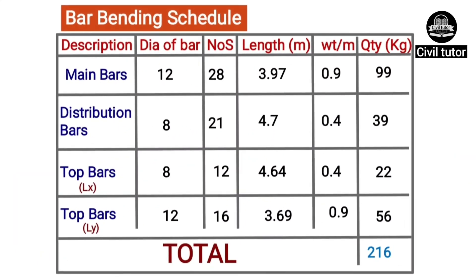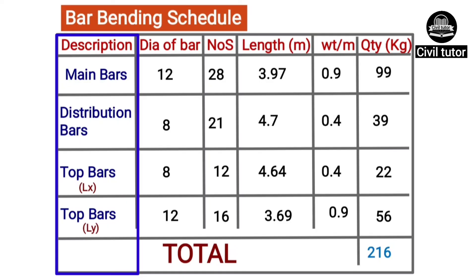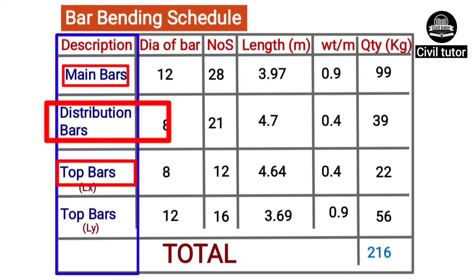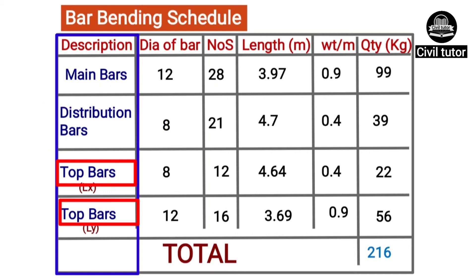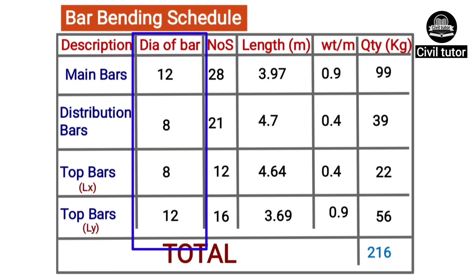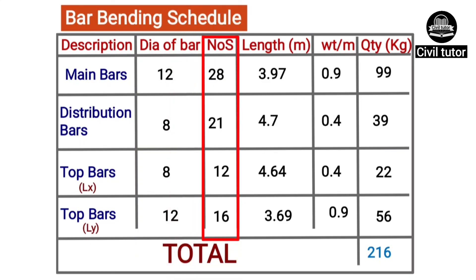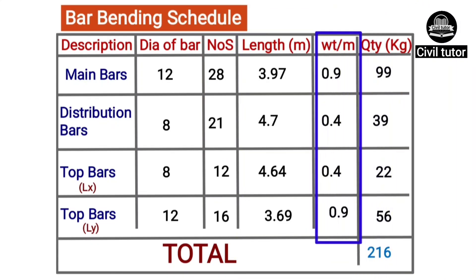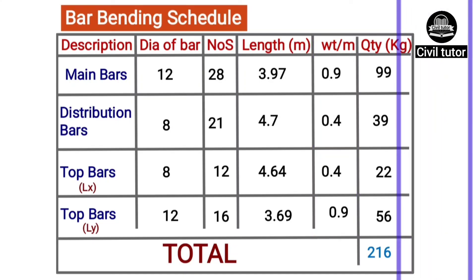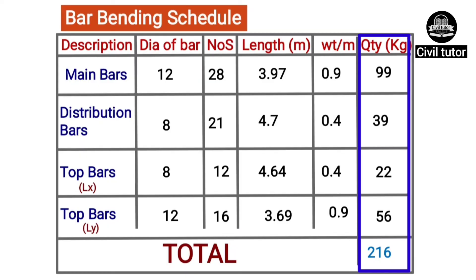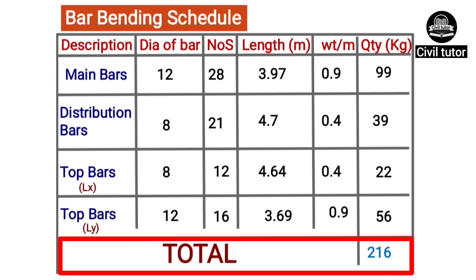The BBS table will be prepared as in our previous lecture. The first column gives the description of bars: main bars, distribution bars, top bars along LX, and top bars along LY. The second column gives the bar diameter, the third the number of bars, the fourth the cutting length, and the fifth the unit weight. The last column gives the total quantity of steel for each bar type, equal to the product of the second, third, and fourth columns. The final row gives the total quantity of steel, equal to the summation of all values in the last column.